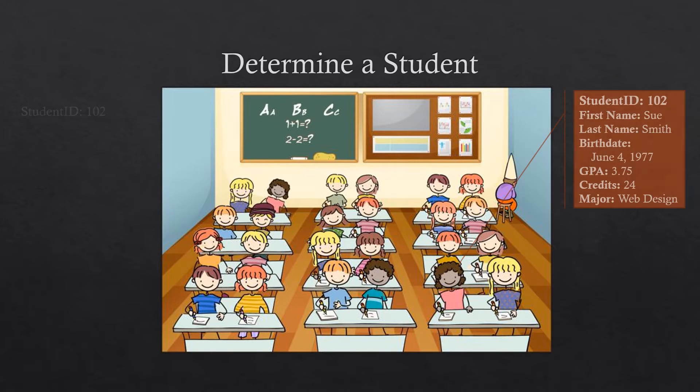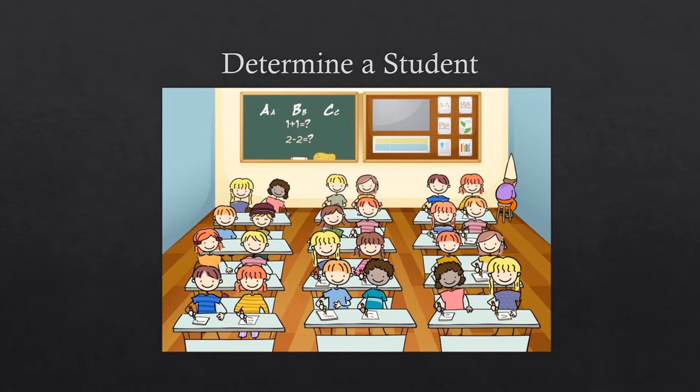And for student ID 102, we get one and only one value for first name, last name, birth date, GPA, credits, and major. So for student ID 102, we only get one student returned, which is what we want.